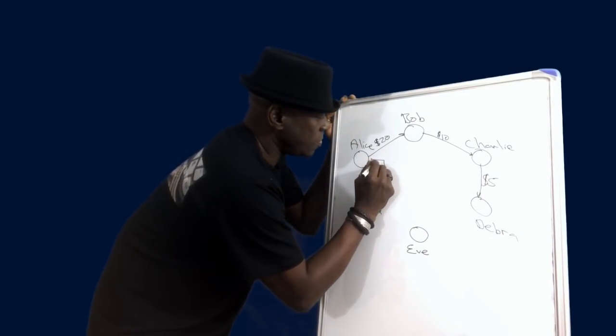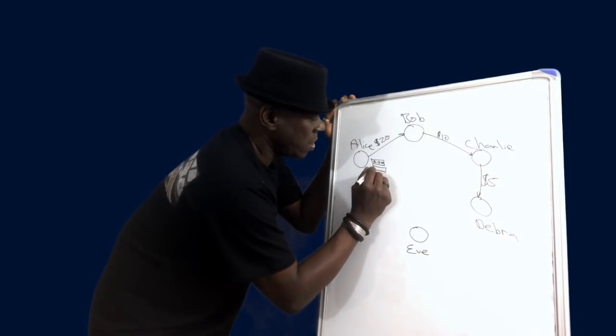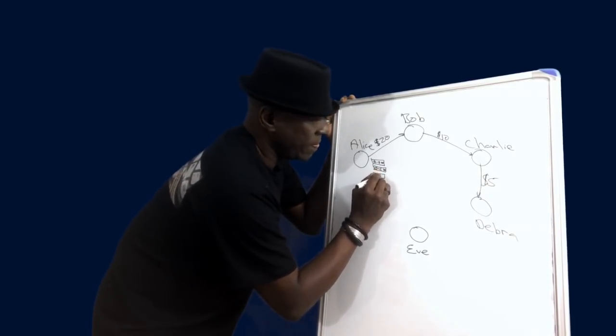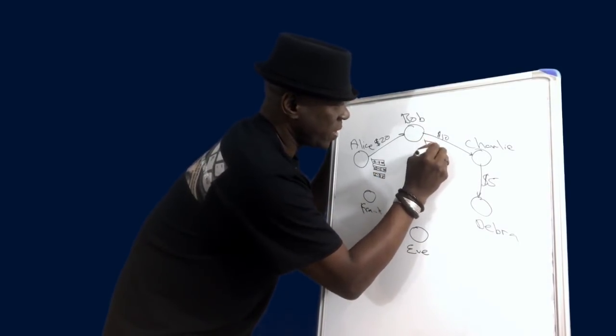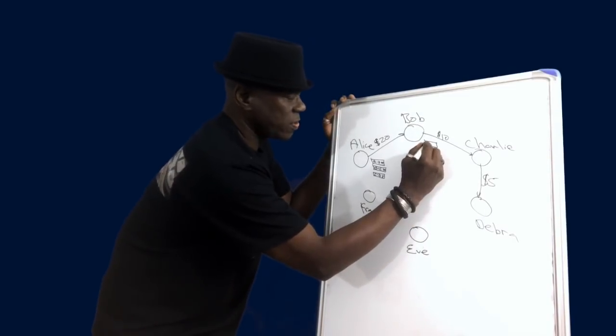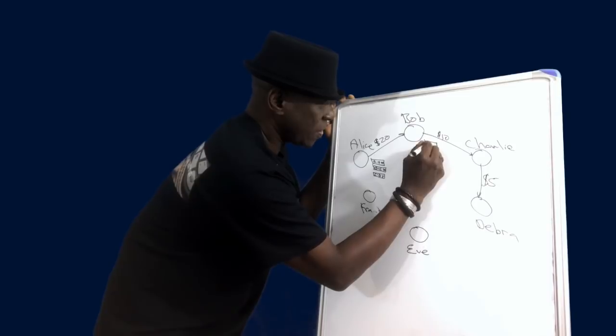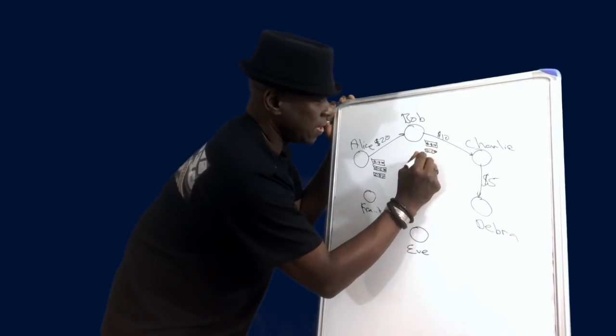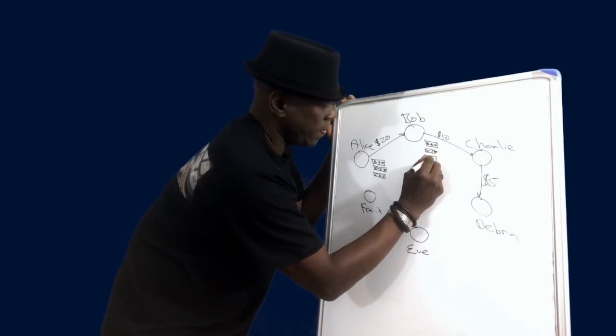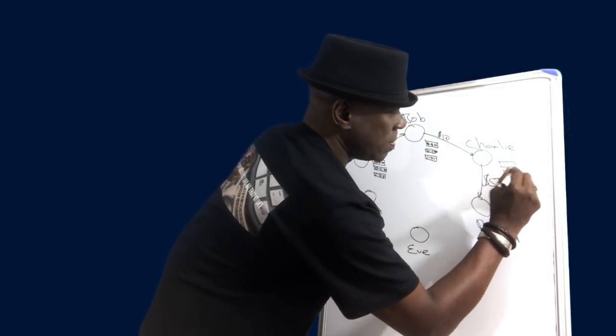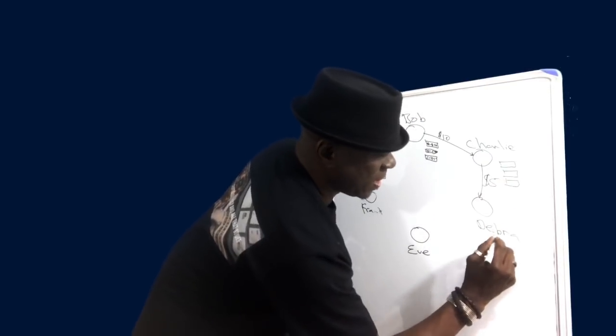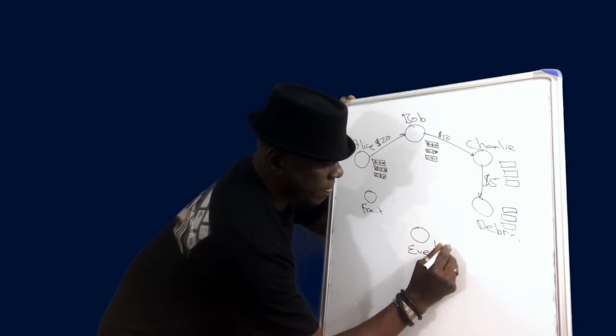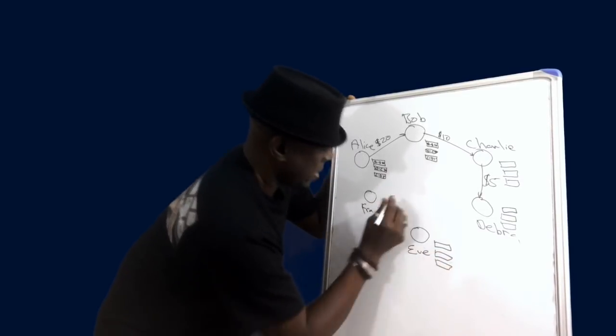So we know A to B $20, B to C $10, and C to D $5. And then because we are in a blockchain decentralized world, all nodes have a copy of the ledger. Charlie has one, Deborah has one, Eve has one, and Frank has one.